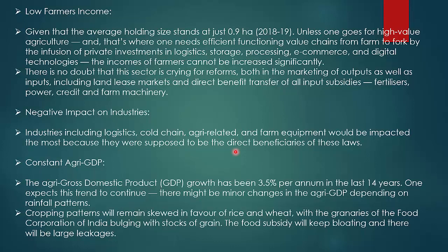The agri GDP growth has been 3.5% per annum in the last 14 years; one expects these trends to continue with minor changes depending on rainfall patterns. Cropping patterns will remain skewed in favour of rice and wheat, with the granaries of the Food Corporation of India bulging. The food subsidy will keep bloating and there will be large leakages — these gaps the government was trying to fill, but in a democracy the government has to listen to its people and stakeholders.